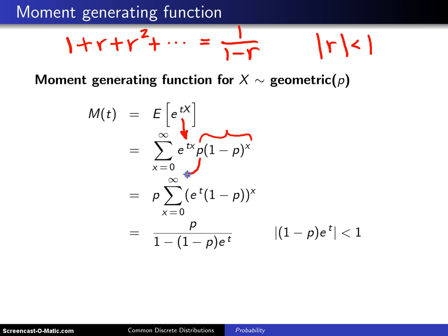Now, p can come out front of this summation because it is a constant. Summation still goes from 0 to infinity. When you have e to the tx multiplied by 1 minus p to the x, since both are raised to the x power, this can be written as e to the t times 1 minus p, that whole quantity raised to the x power.